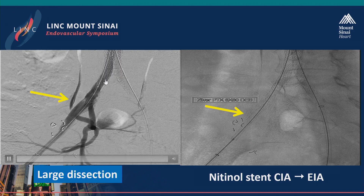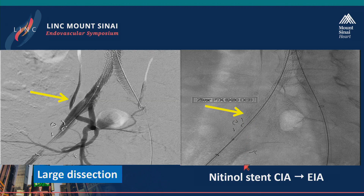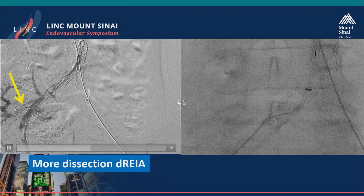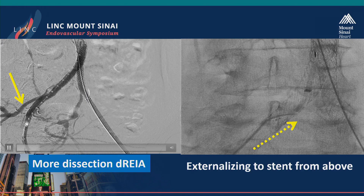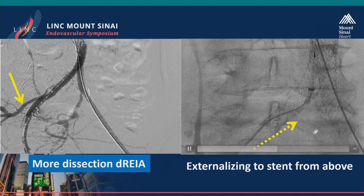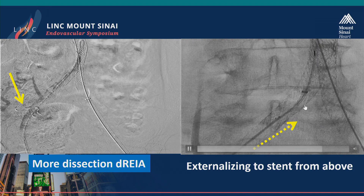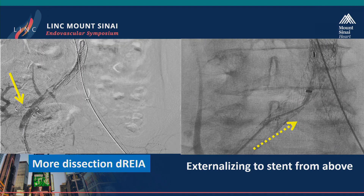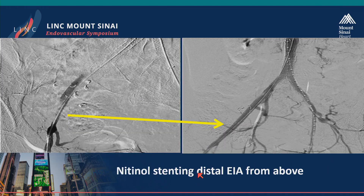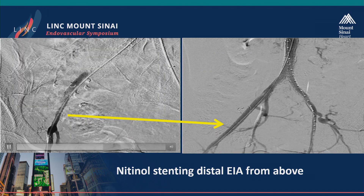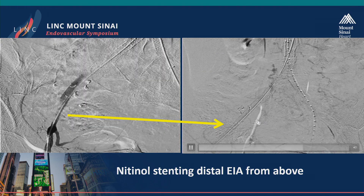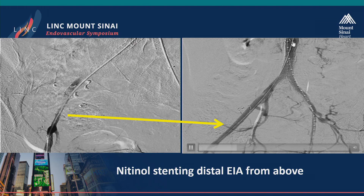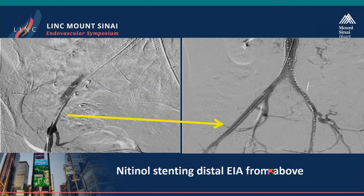Going back and forth on stent choice — we've got a nice result in the common, but you can see the dissection extending from the common into the external iliac. That's a great place to use a nitinol stent. Now there's a little bit more of a problem here, so like has been shown, we snared a wire into a 4-French catheter so that we can do this last stent from above so we don't get too close to the common femoral artery. And here we stent that from above using that externalized wire — a nice result in all with a combination of nitinol and balloon expandable stents.